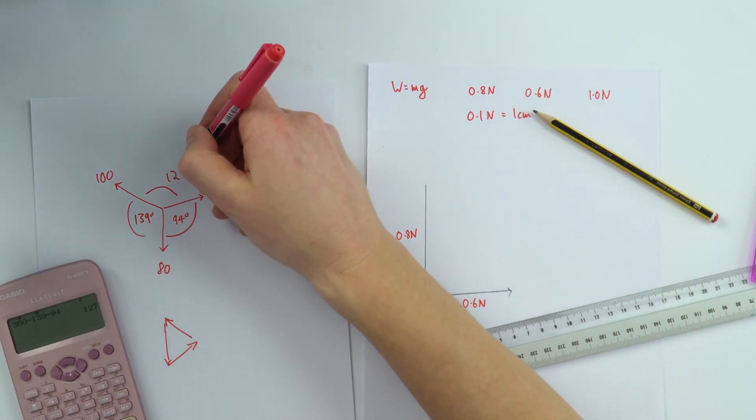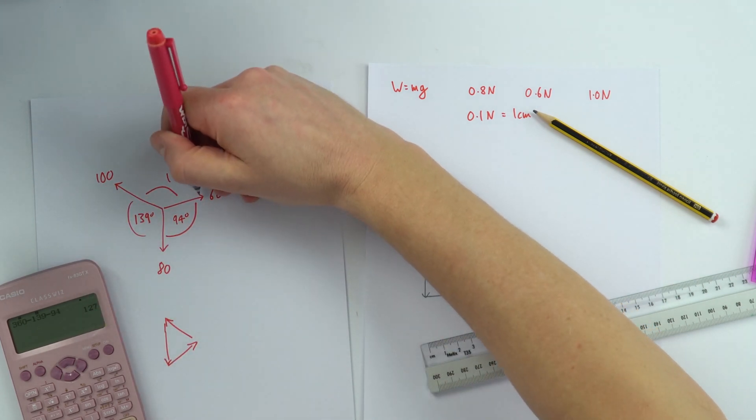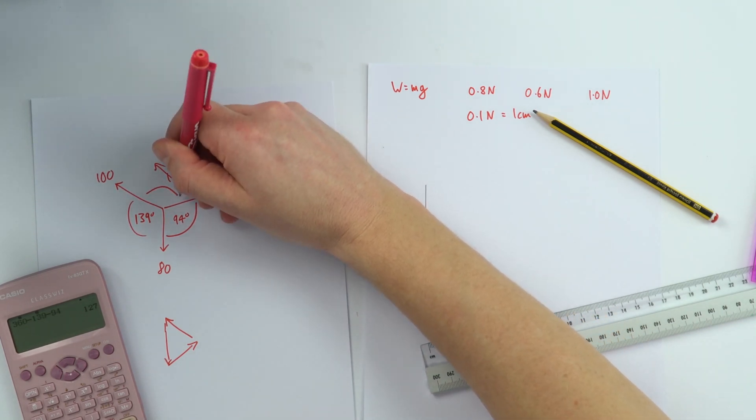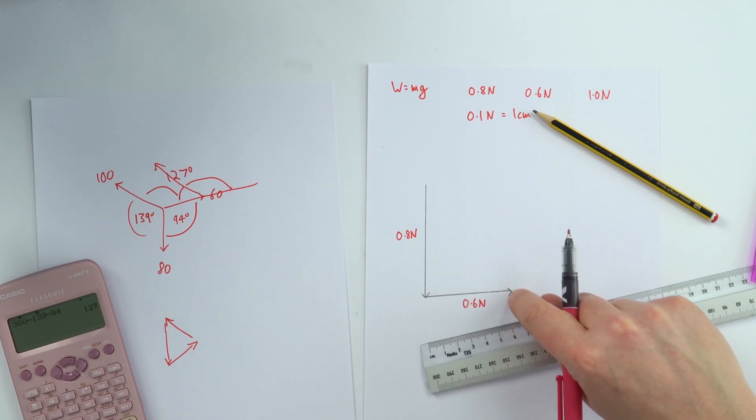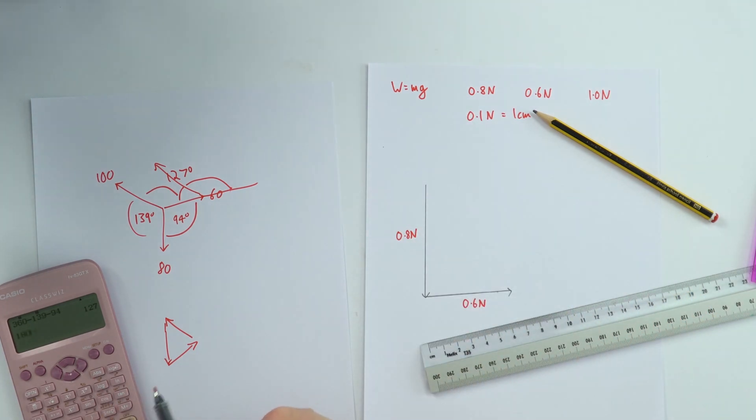There's going to be an angle of 127 degrees between this line and this line. So the angle in here between this line and the line that comes up which is going to be 10 centimeters long is equal to 180 minus 127 which is 53. This is where it just takes a little bit of time to work it out in your head.